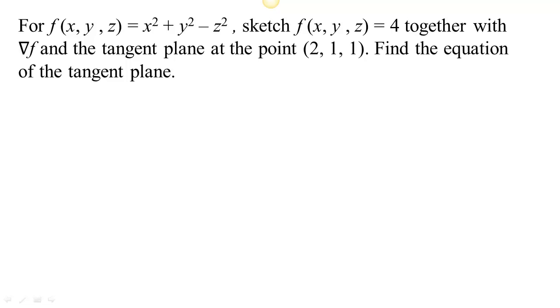This function has three inputs and one output, so we can't visualize the graph, but we can look at level sets. In particular, if you look at this level set where the output is 4, then we have a hyperboloid.